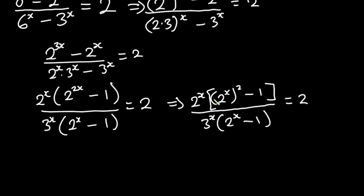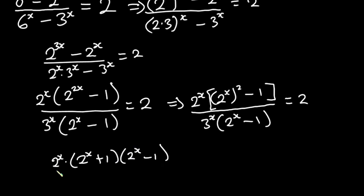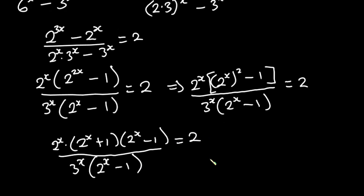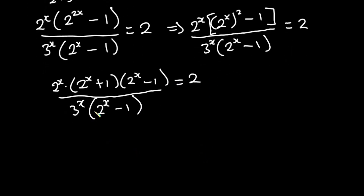This is the same as difference of two squares. So we have 2 to the power x times (2 to the power x plus 1) times (2 to the power x minus 1), all divided by 3 to the power x times 2 to the power x minus 1, and the whole thing is equal to 2. As you can see, we have 2 to the power x minus 1 in both numerator and denominator.